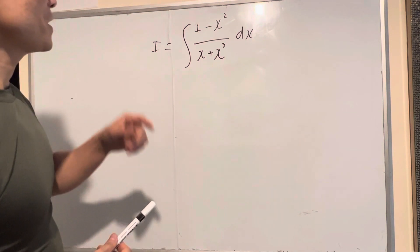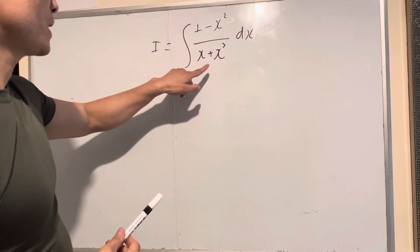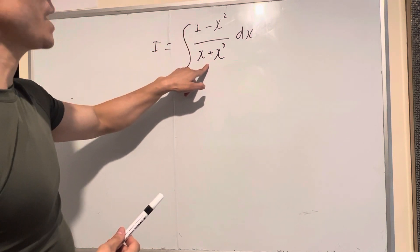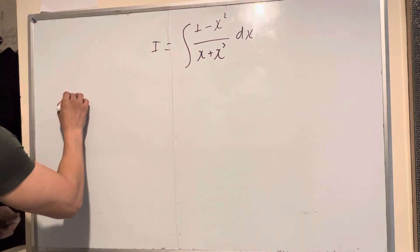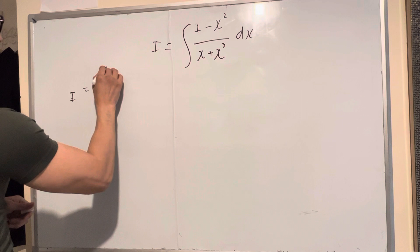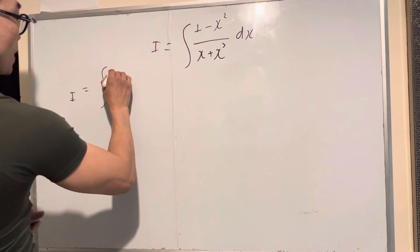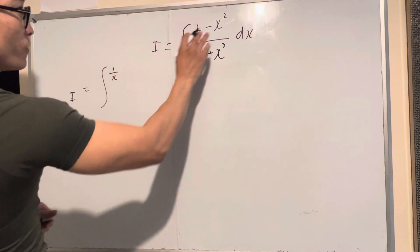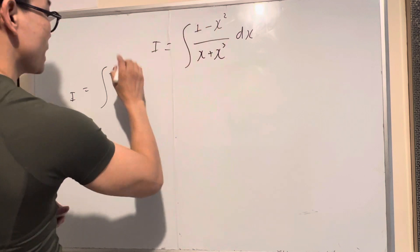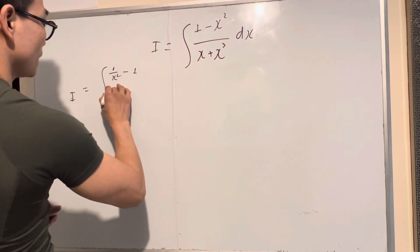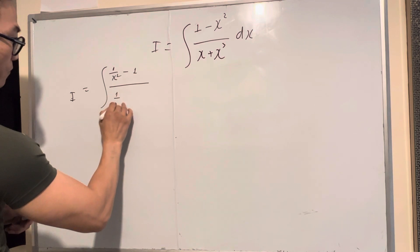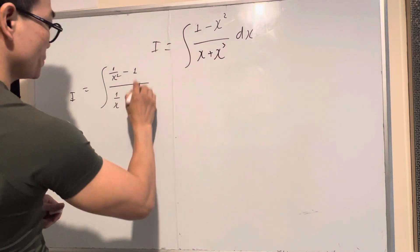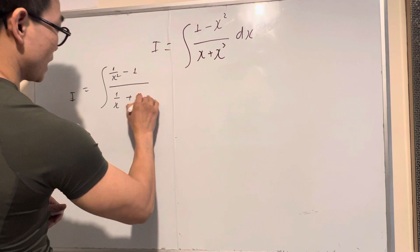But you can see in the numerator and denominator, you can divide both by x square. And then you have 1 divided by x square equals 1 over x square. x square divided by x square equals 1. In the denominator, x divided by x square equals 1 over x, and then x cubed divided by x square equals x.